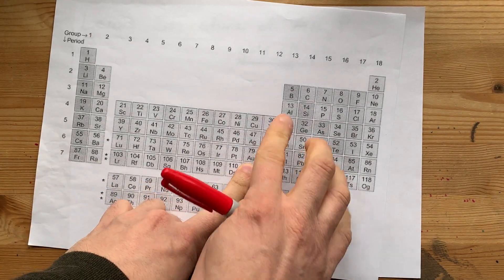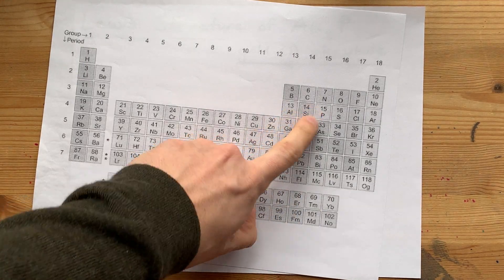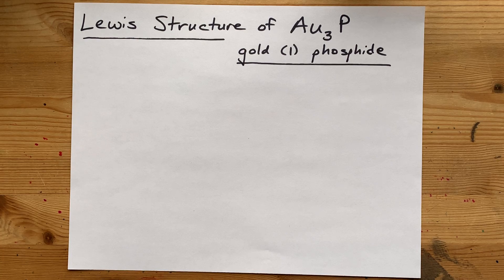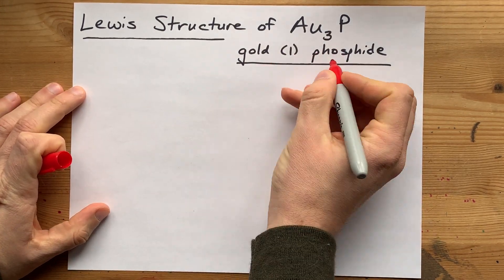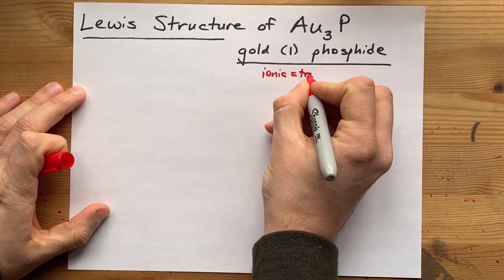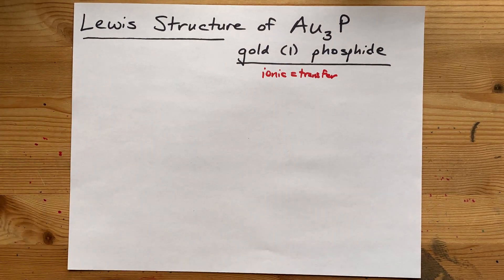Gold is a metal. It comes from the left-hand side of this staircase on the periodic table. And phosphorus is a non-metal. It comes from the right-hand side of the periodic table. That's significant because a metal and non-metal always combine to make an ionic compound. And ionic compounds are made by a transfer of electrons.